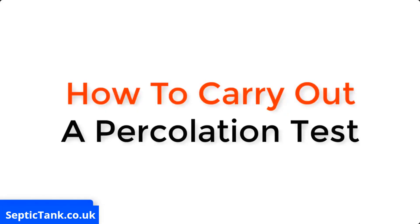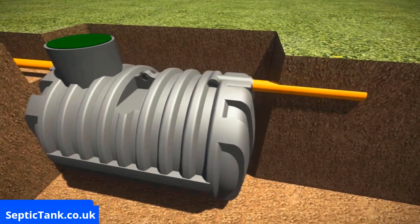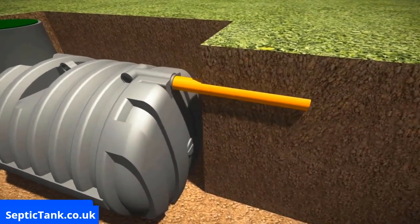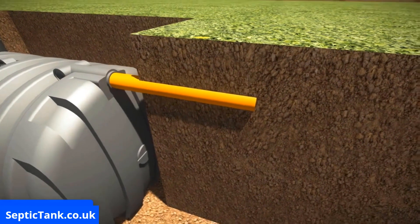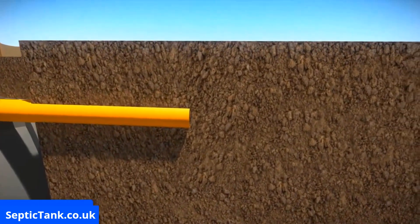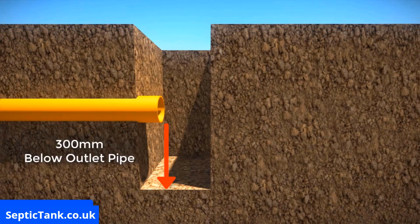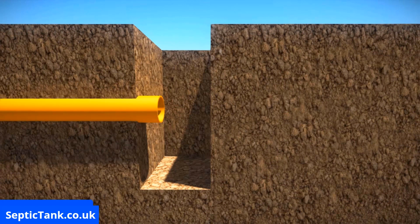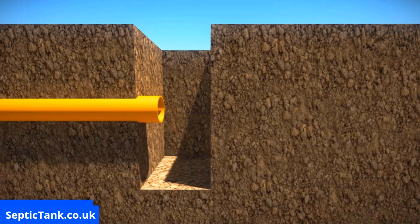So how do you carry out a percolation test? You need to first of all work out where you're going to install your septic tank, then work out where the outlet pipe will be. Once you've done that, you need to dig a hole 300 millimetres square to a depth of 300 millimetres below the level of the outlet pipe. Then fill the hole to a depth of at least 300 millimetres of water and allow it to seep away overnight.